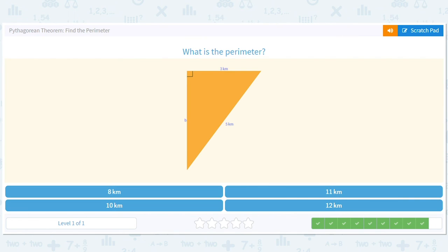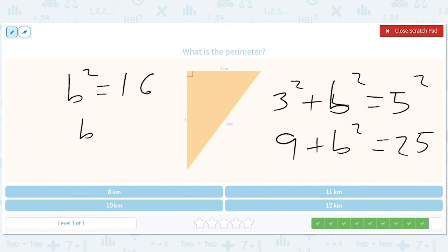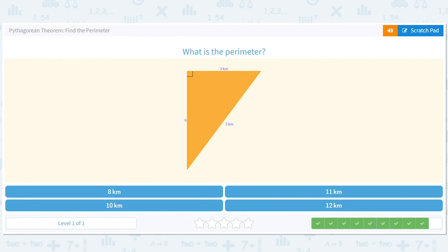24. And last but not least, our favorite kind: 3-4-5. 3 squared plus B squared equals 5 squared, so 9 plus B squared equals 25. B squared equals 16. B equals 4. That's 4. 4 plus 3 is 7, 7 plus 5 is 12, so we end up with 12 kilometers.